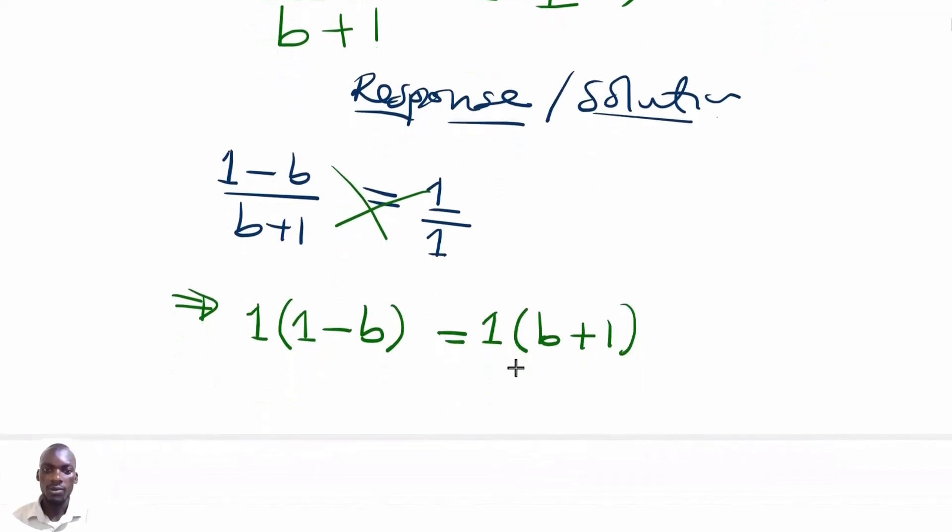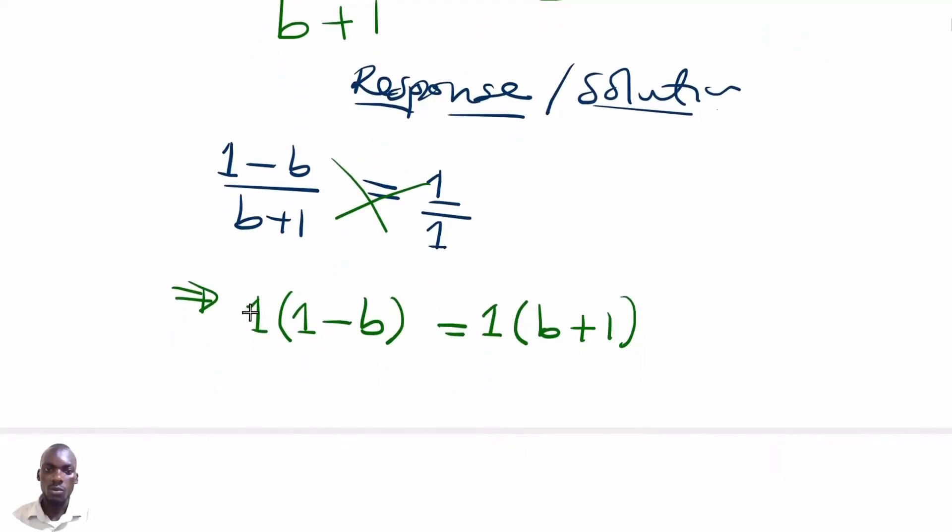Then from here, we need to simplify whereby we are going to multiply so that the brackets can disappear. So we have 1 multiplied by 1 to give us 1, then minus 1 multiplied by b to give us b, equals to 1 multiplied by b to get b, plus 1 multiplied by 1 to give us 1.